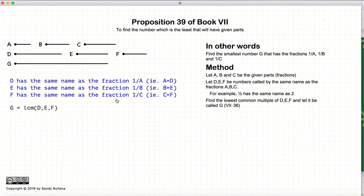So to find the smallest number G that has the fractions of A, B, and C, first we take the lowest common denominator of D, E, and F using proposition 36. And of course, because it's the lowest common denominator, D, E, and F measure G.